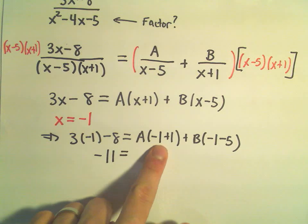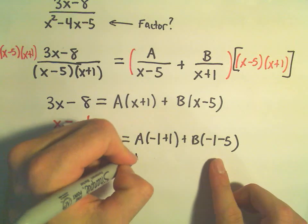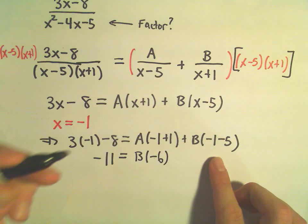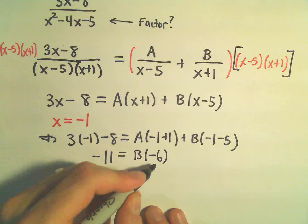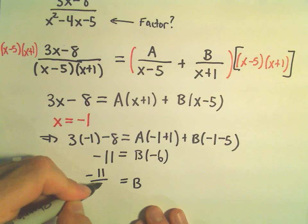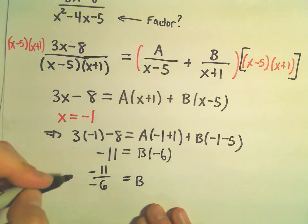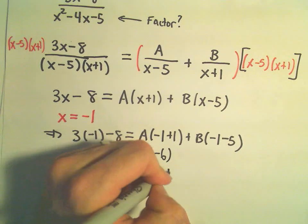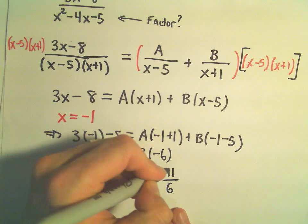We have A times 0, and then we have B times negative 6. And if we divide both sides by negative 6, we'll get negative 11 over negative 6, or simply, we'll get that B has value 11 over 6.